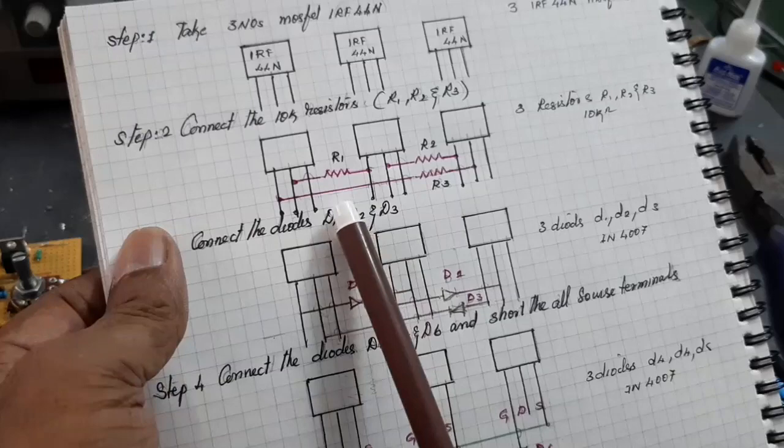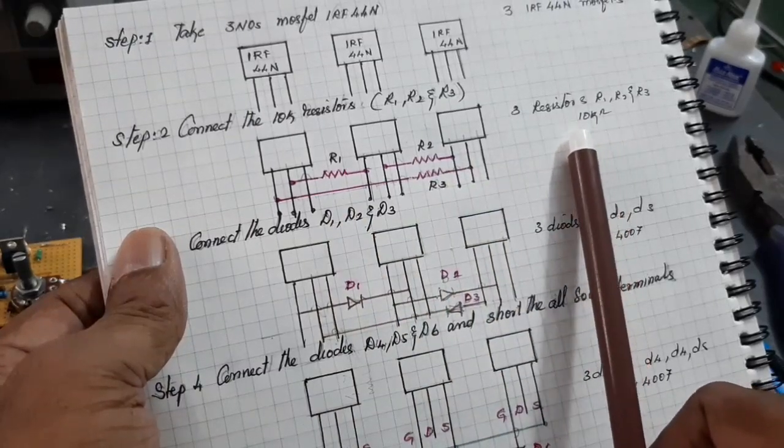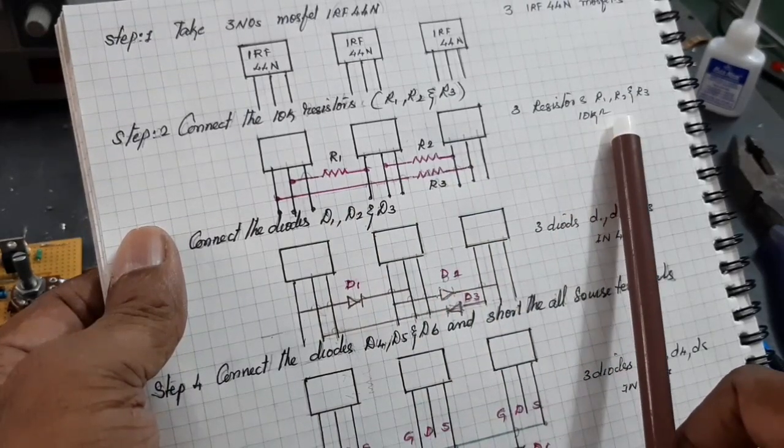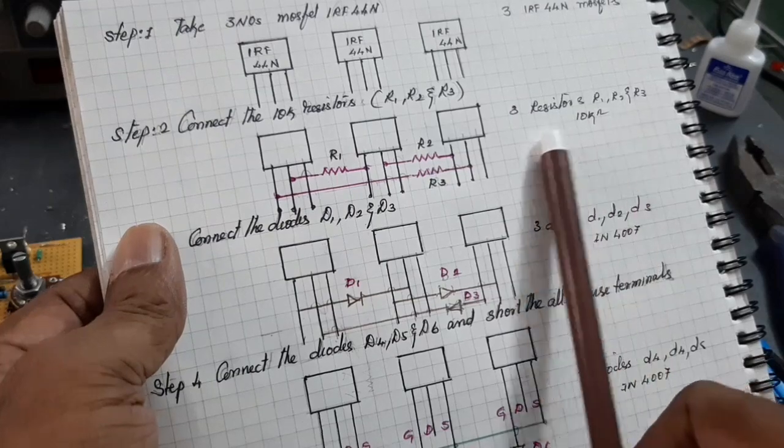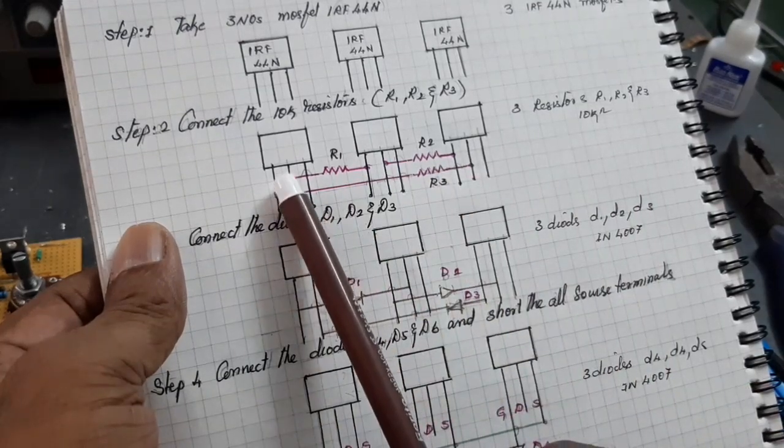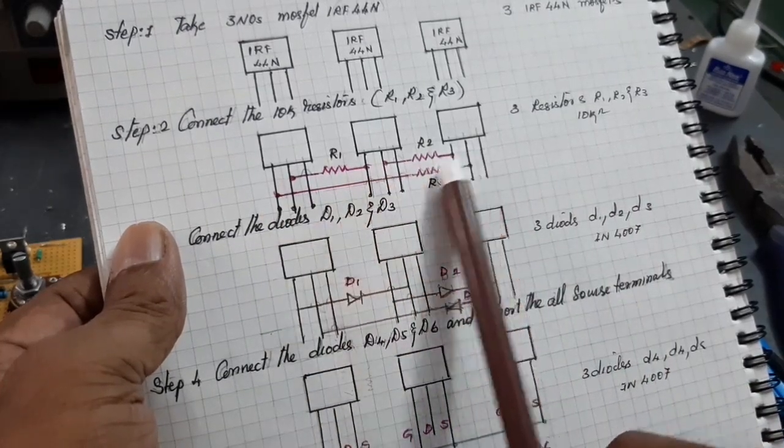Resistor 3. Take 3 10k resistors, 10k ohm resistors. And connect the terminal from 2 to 1, to 2 to 1.